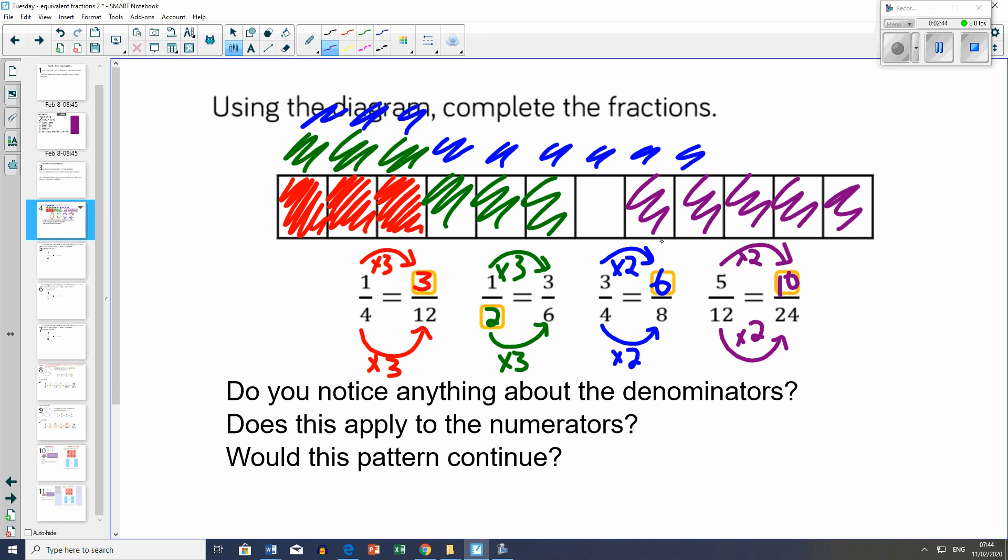The questions at the bottom ask: do we notice anything about the denominators? Yes, they're multiples of each other. Or you might say that the number on the right, the bigger number, is in the smaller number's times table. Does this pattern continue? Yeah, it could continue.